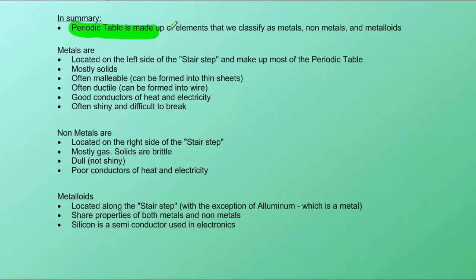In summary, the periodic table is made up of elements that we classify as metals, nonmetals, and metalloids. The metals are located on the left of the stair step, and they make up most of the periodic table.